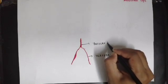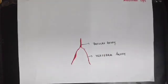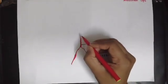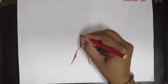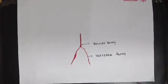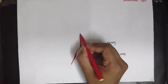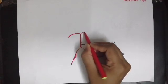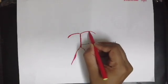The basilar artery gives out so many branches, which we will discuss later. This basilar artery ascends upwards and at last terminates by dividing into two terminal branches, which are the two posterior cerebral arteries.